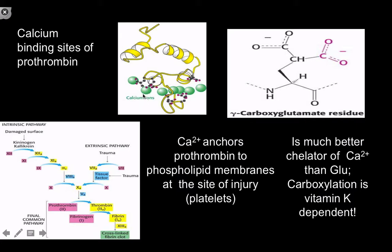Calcium is really important here because it will form a precipitate with anything that is anionic very quickly. In this context, we're exploiting that property — by using calcium, we can localize prothrombin to the site of injury, usually on the anionic surfaces of the platelet. To facilitate this binding, we add a gamma-carboxyl group via vitamin K, creating a chelator that prevents the ion from floating around and binding elsewhere.